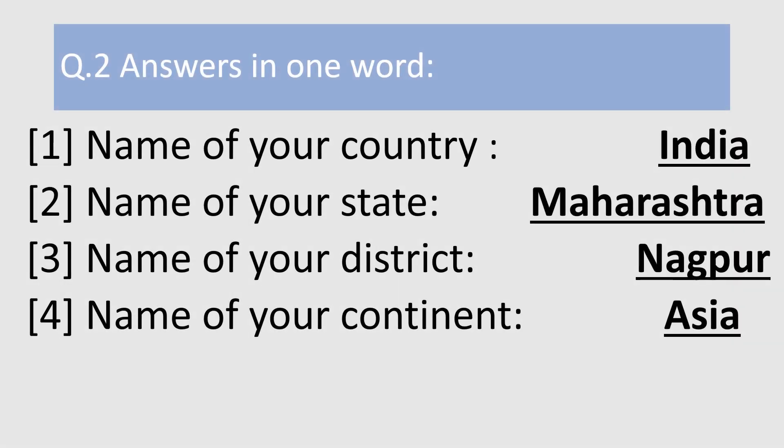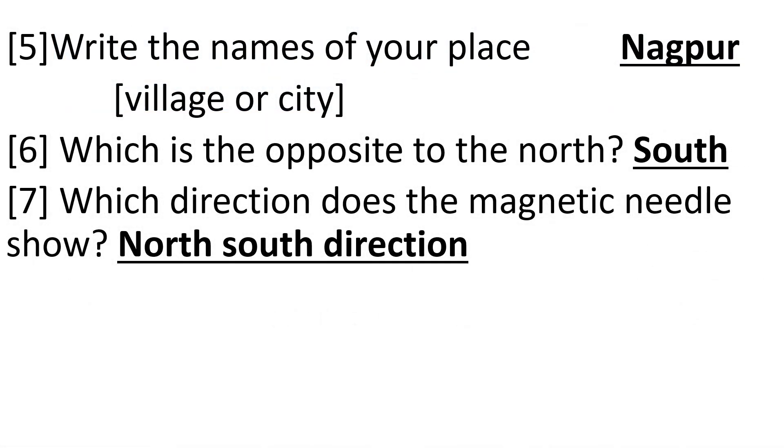Question number 2, answer in one word. First one, name of your country — answer: India. Second, name of your state — answer: Maharashtra. Number 3, name of your district — answer: Nagpur. Number 4, name of your continent — answer: Asia. Number 5, write the name of your place — here you have to write the name of your city or village. Answer is Nagpur.